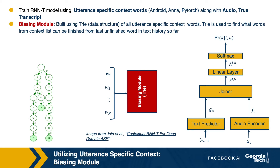We build a trie using these three contextual words. Then, at each decoding step during training and decoding, we query this trie to find out what the next possible letter would be if we were to complete the last unfinished word in the text history with one of the words from the contextual list. For example, if our text history is 'movies with AN', the last unfinished word is 'AN'. Querying the trie reveals two words from the contextual list that could be completed with the prefix 'AN': Android and Anna.